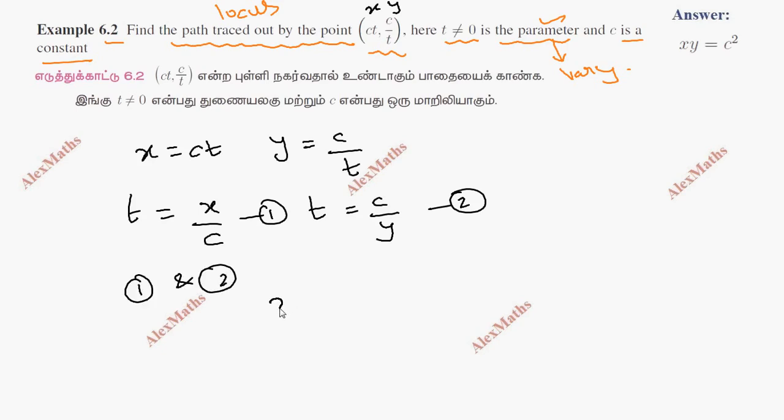Equate: x over c equals c over y. Cross multiply: xy equals c squared. This is the path traced out by the point.